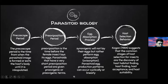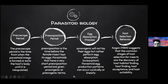Sometimes parasitoids will not lay their eggs but rather perform egg absorption or ovi-sorption. Parasitoid egg production patterns can occur cyclically or linearly. The last aspect is host selection behavior: Kogan 1984 suggests the common stages of host selection for insects are the discovery of host habitat, host finding, host acceptance, and host suitability.